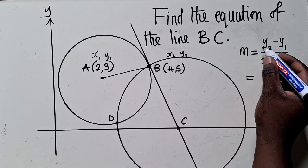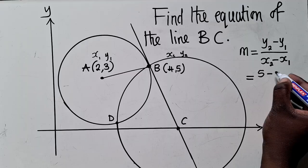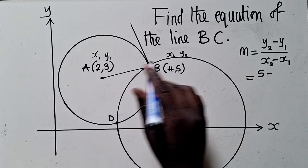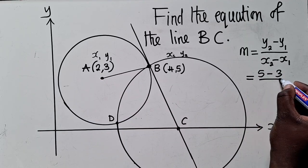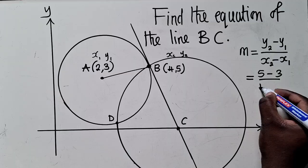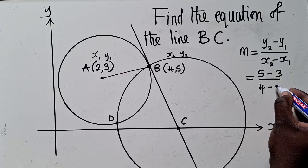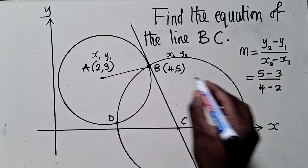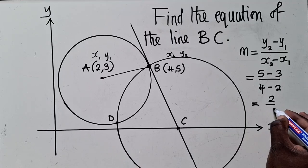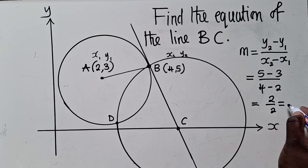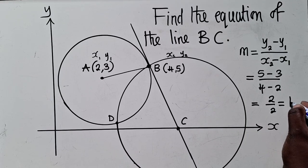So we can say, what is our Y2? X2 is 5, minus Y1, Y1 is 3, over X2, that's 4, minus 2, which is X1 here. And this will give us 2 over 2. Our gradient is 1.